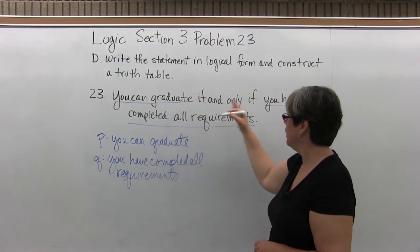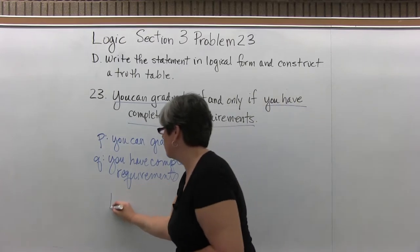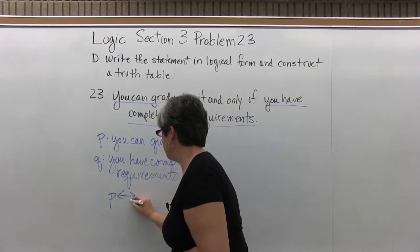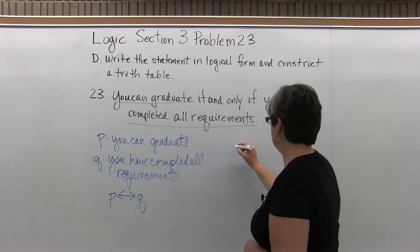That gives us the statement P if and only if Q, which we write with a double arrow. And now for the truth table.